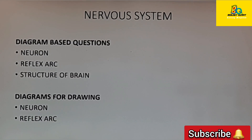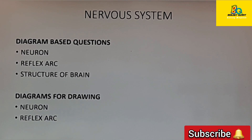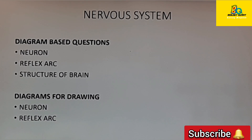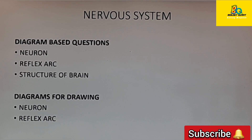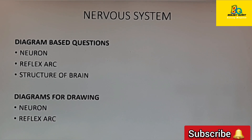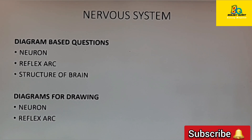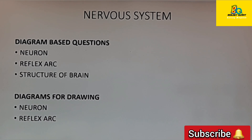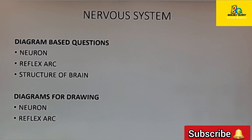The next chapter is nervous system. The diagrams you can expect for diagram-based questions are the structure of neuron, reflex arc, and structure of brain. The diagrams which you need to draw and study are the structure of neuron and reflex arc.